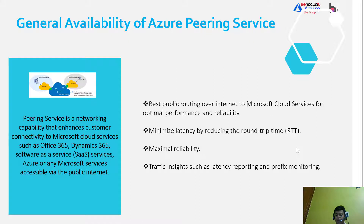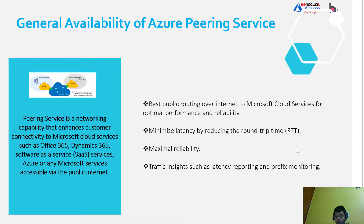So we are calling it a pseudo private network. For this service, the ISP — the internet service provider — will establish peering between the network and the Microsoft Edge network. This peering will then route all the traffic from the provided IP prefix towards the closest Microsoft point of presence.